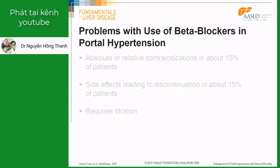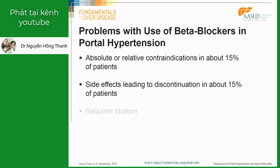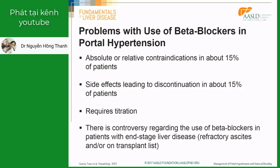Beta-blockers are not ideal drugs. They cannot be used in around 30% of the patients: 15% of them have absolute or relative contraindications, and another 15% have side effects leading to discontinuation. Also, the use of beta-blockers is time-consuming because they require titration. The latest controversy is whether beta-blockers may be dangerous in some patients, especially with end-stage liver disease, and this was especially questioned in patients with refractory ascites.